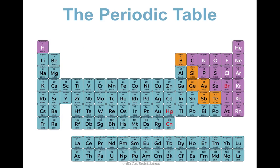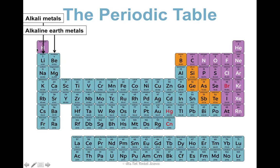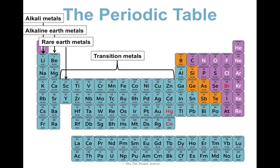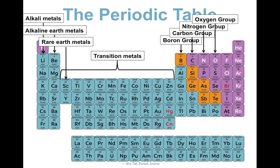In terms of labeling your periodic table: we've got the alkali metals — note that the arrow does not include hydrogen. We've got the alkaline earth metals, the rare earth metals, and the transition metals covering the whole middle section. Then the boron group, carbon group, nitrogen group, and oxygen group, which have boring names I don't really care if you know. But I do want you to know halogens and noble gases.